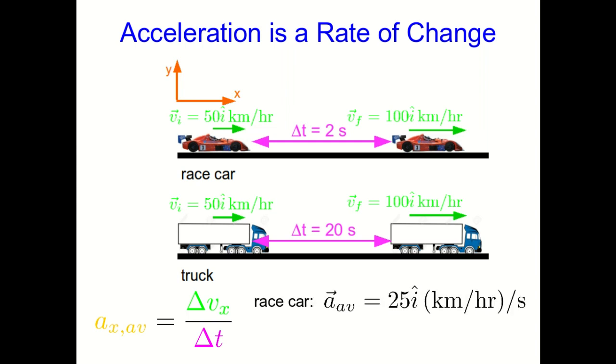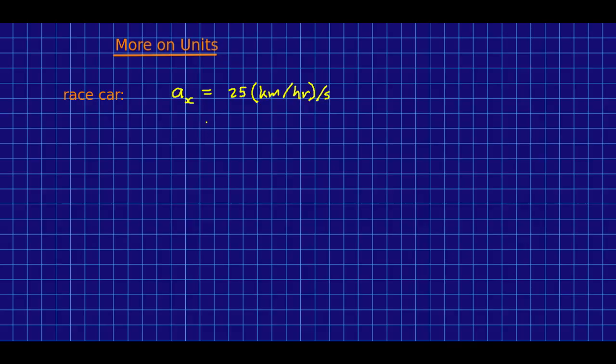For the race car, that gives us 25 kilometers per hour per second in the x direction, so on average each second it's speeding up by 25 kilometers per hour, whereas for the truck that's a much lower 2.5 kilometers per hour per second. I just want to point out these are averages, because all we're working with is a final and initial velocity. We don't know when in this time period most of that change happened.